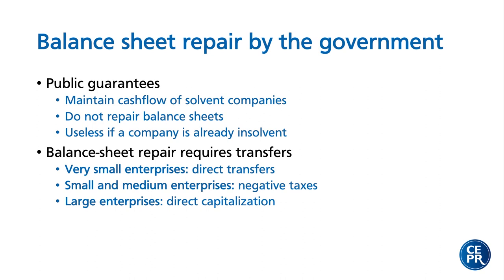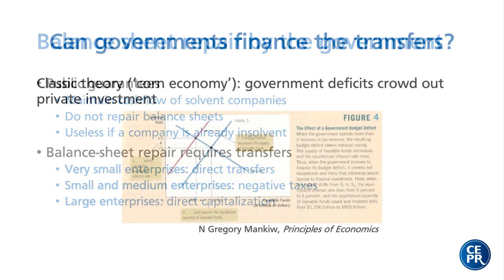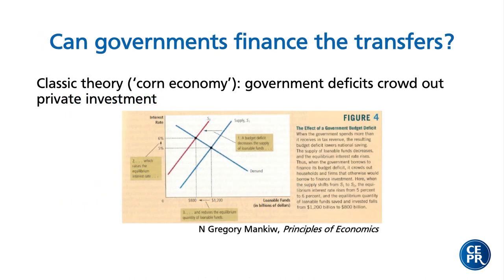Modern monetary theory says in principle, for large countries, there is no constraint on financing for the government. In standard textbooks — mainstream principles of economics — you see that government finance leads to direct crowding out of private investors. From that perspective, one would say government finances are quite limited. MMT says there are no financial limitations; the classical approach says there is very direct crowding out and funds for governments are very limited.